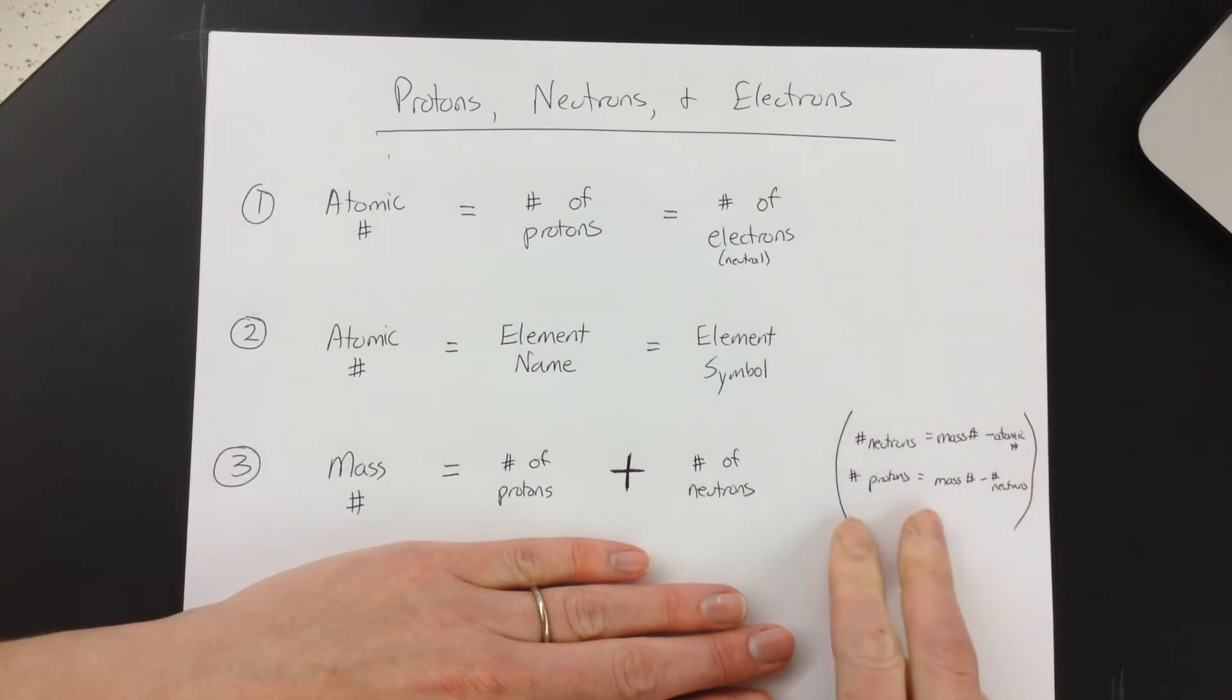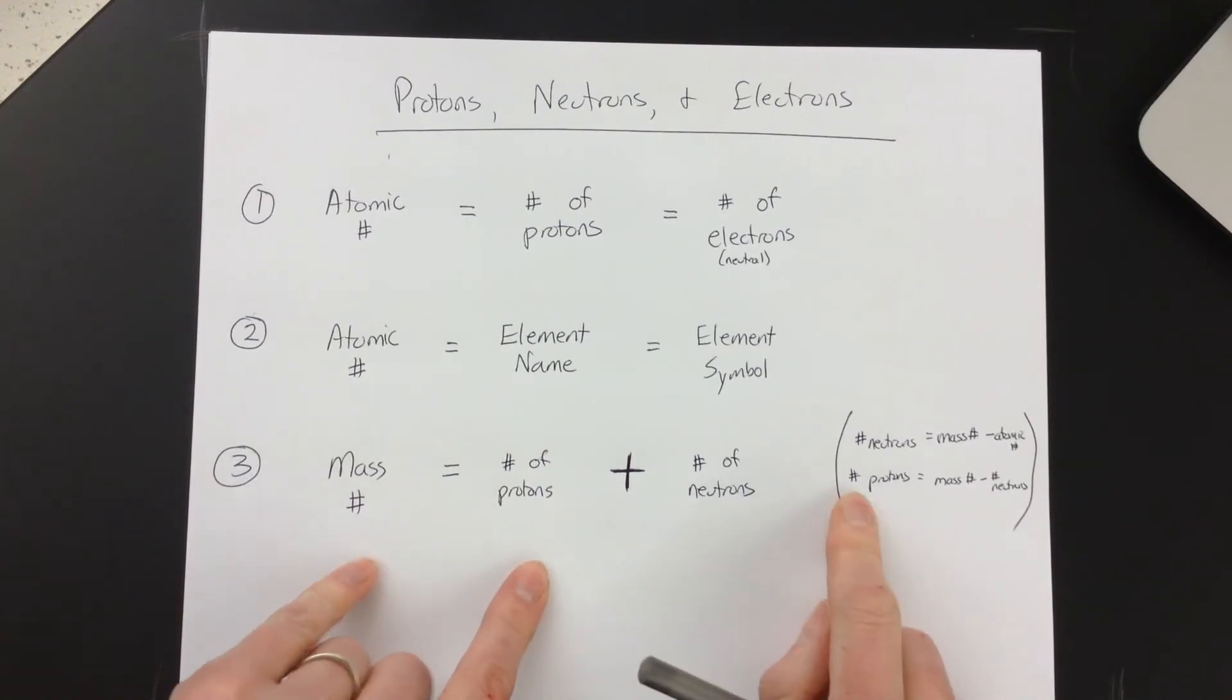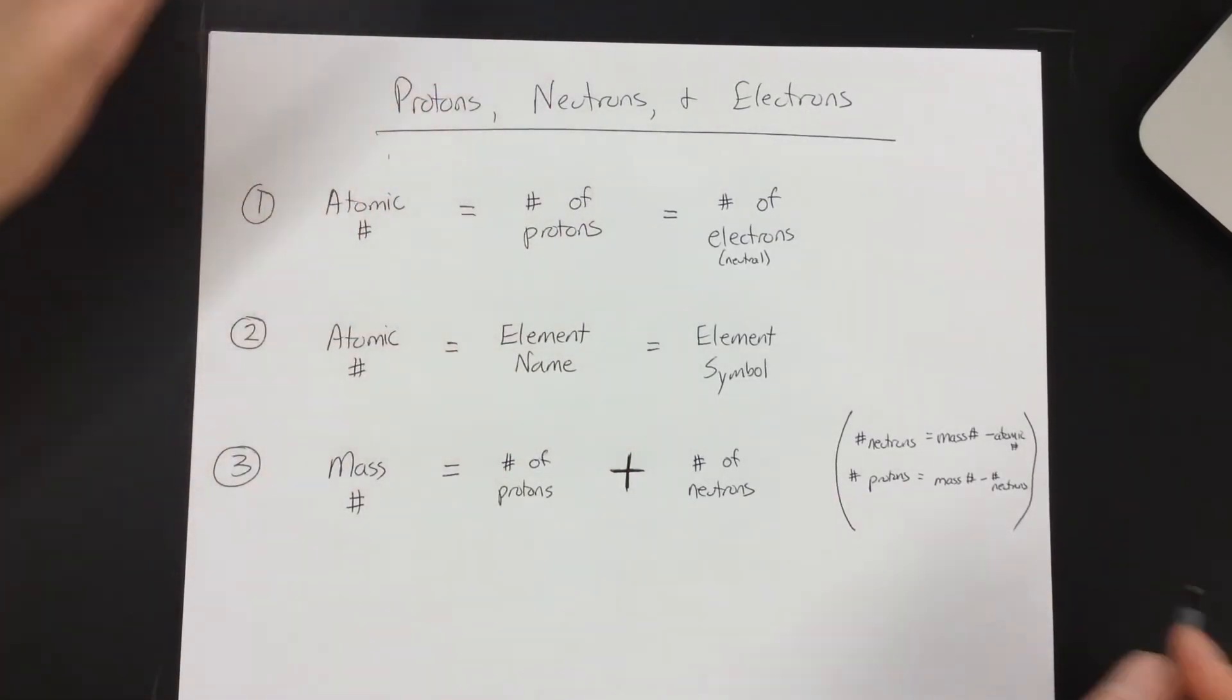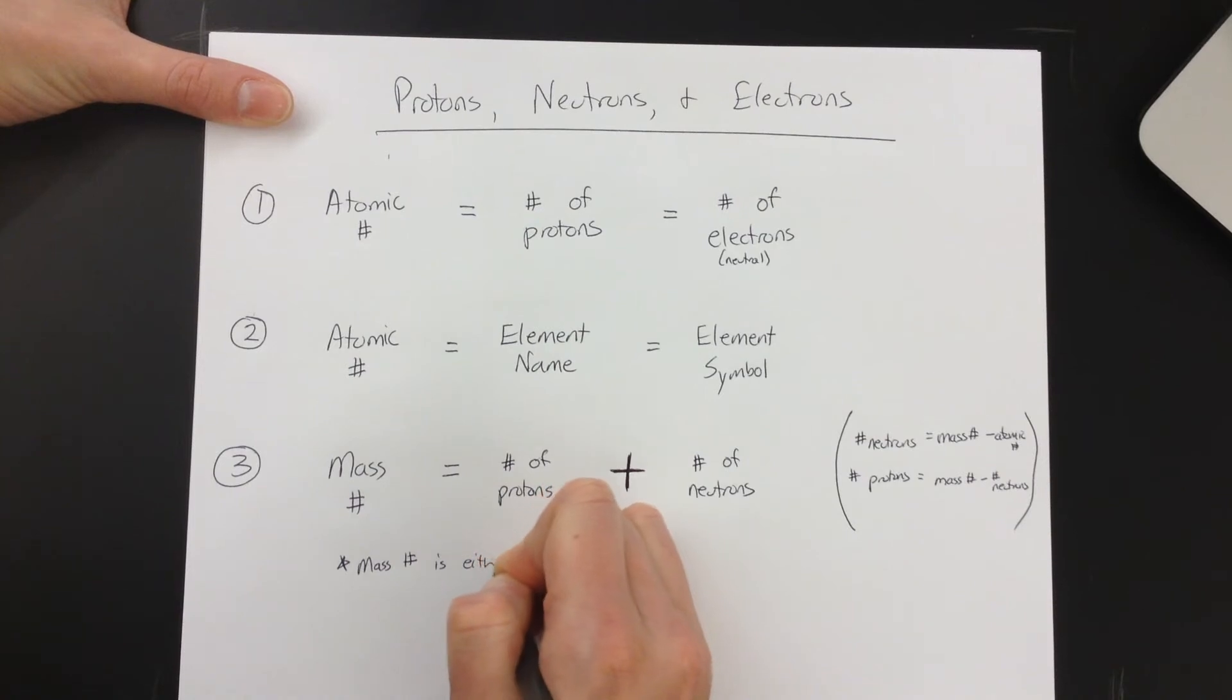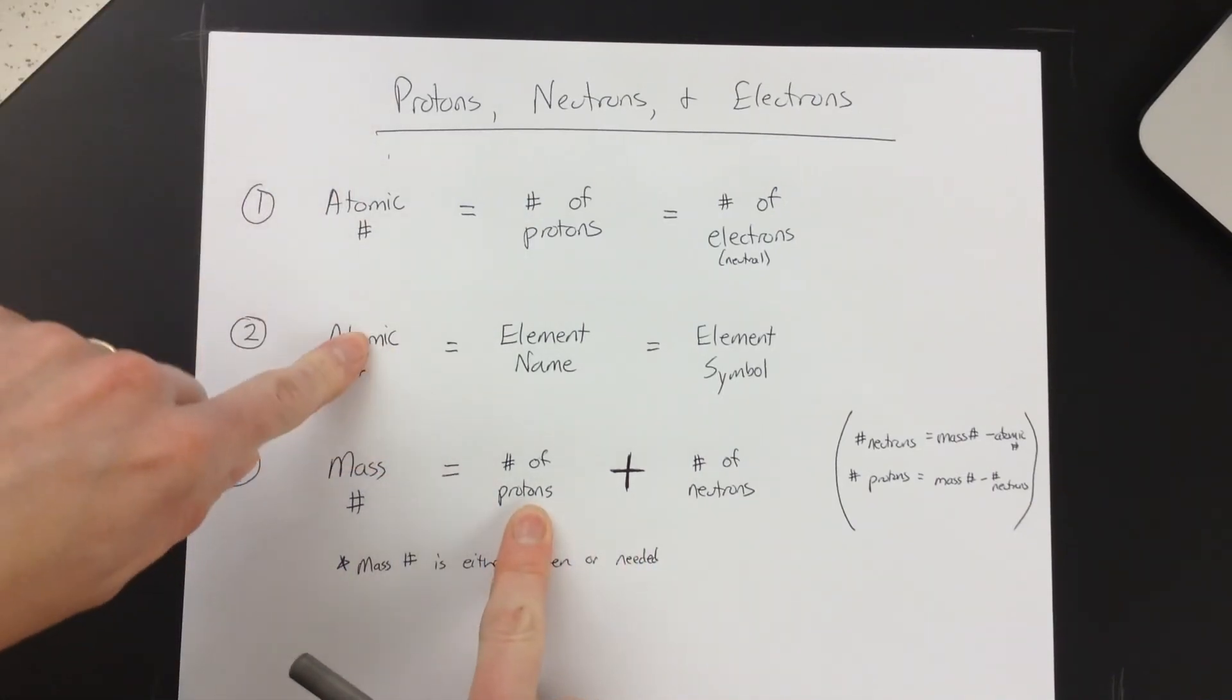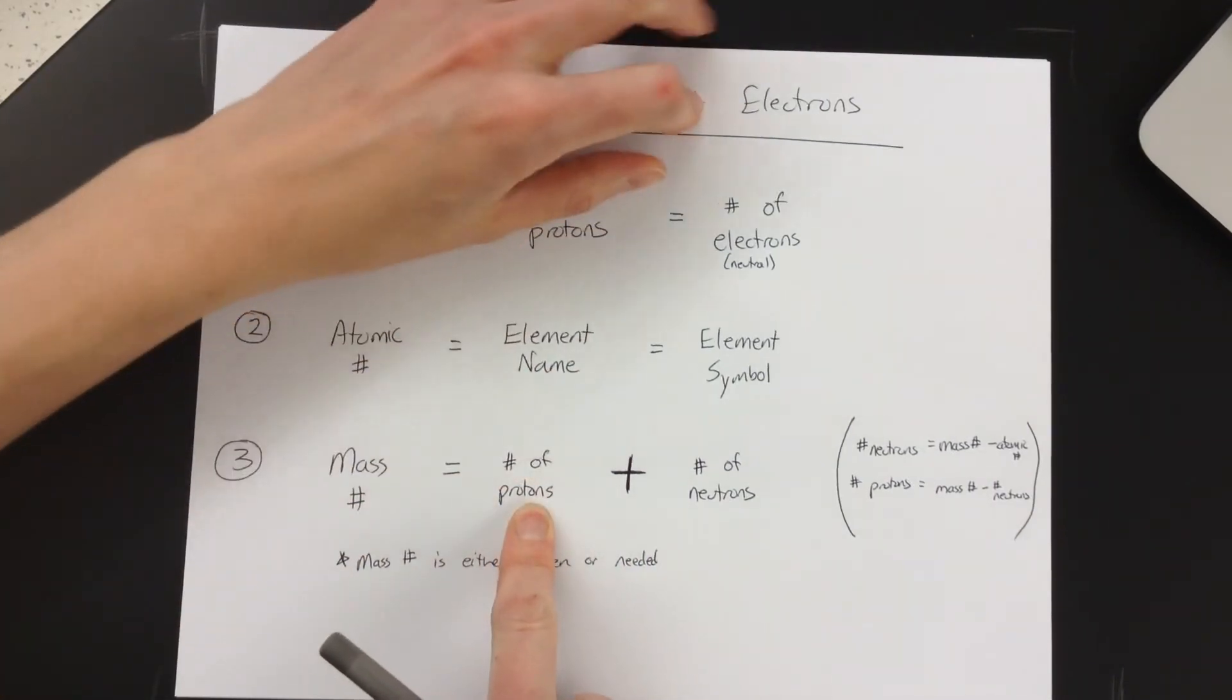So it just depends on what you have as to what you can get. You just have to know the relationships between these to be able to get them. I do want to write down two notes. The mass number is either going to be given or needed. So you'll either have this and you'll need one of these, or you'll have these and need this. Or maybe you have neutrons and the atomic number, which means you do have the number of protons, so you just have to figure out what they're equal to.